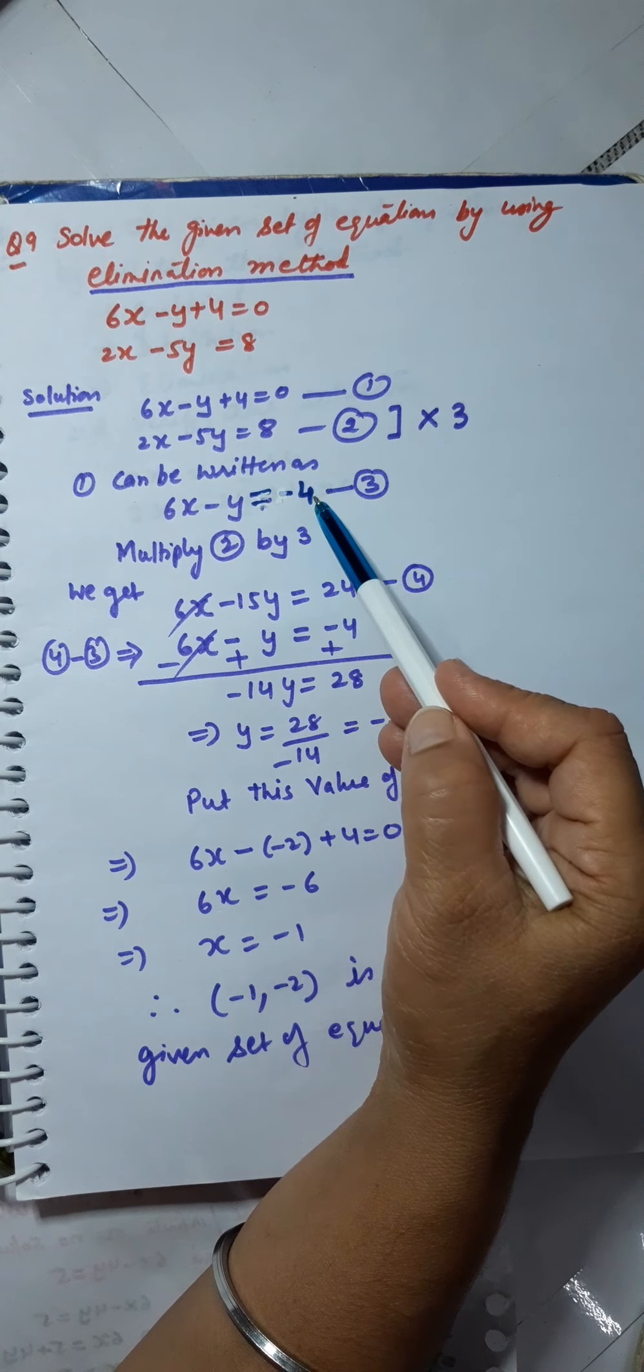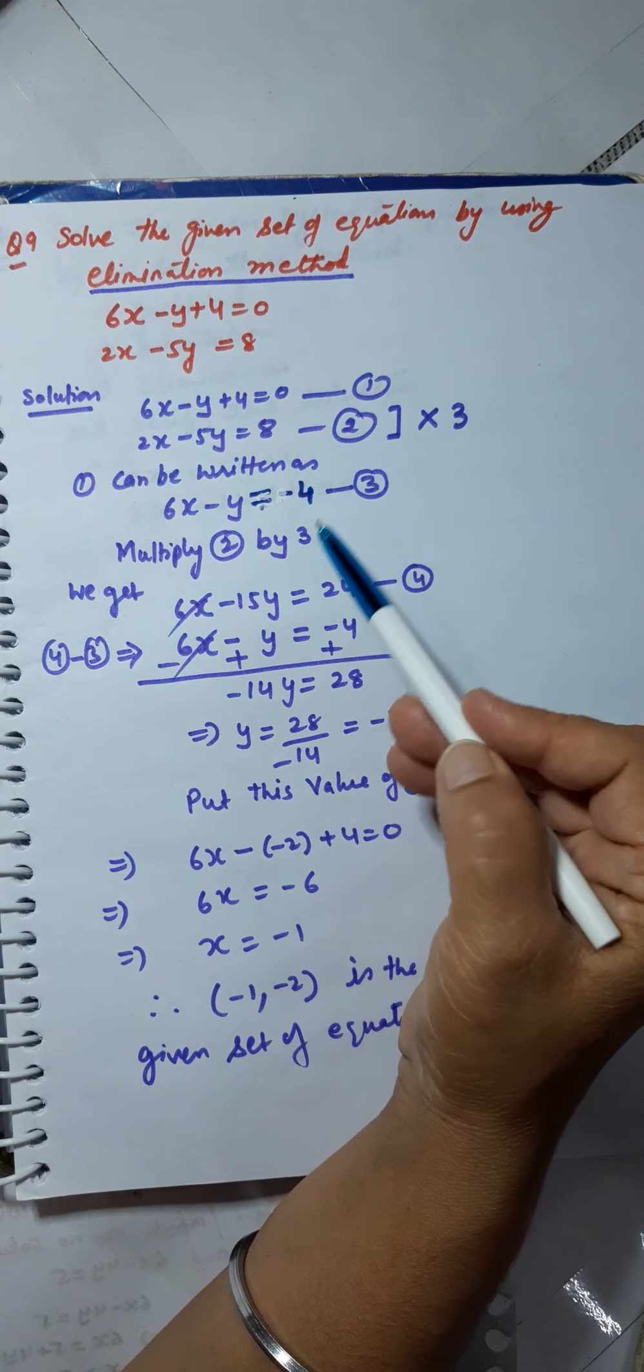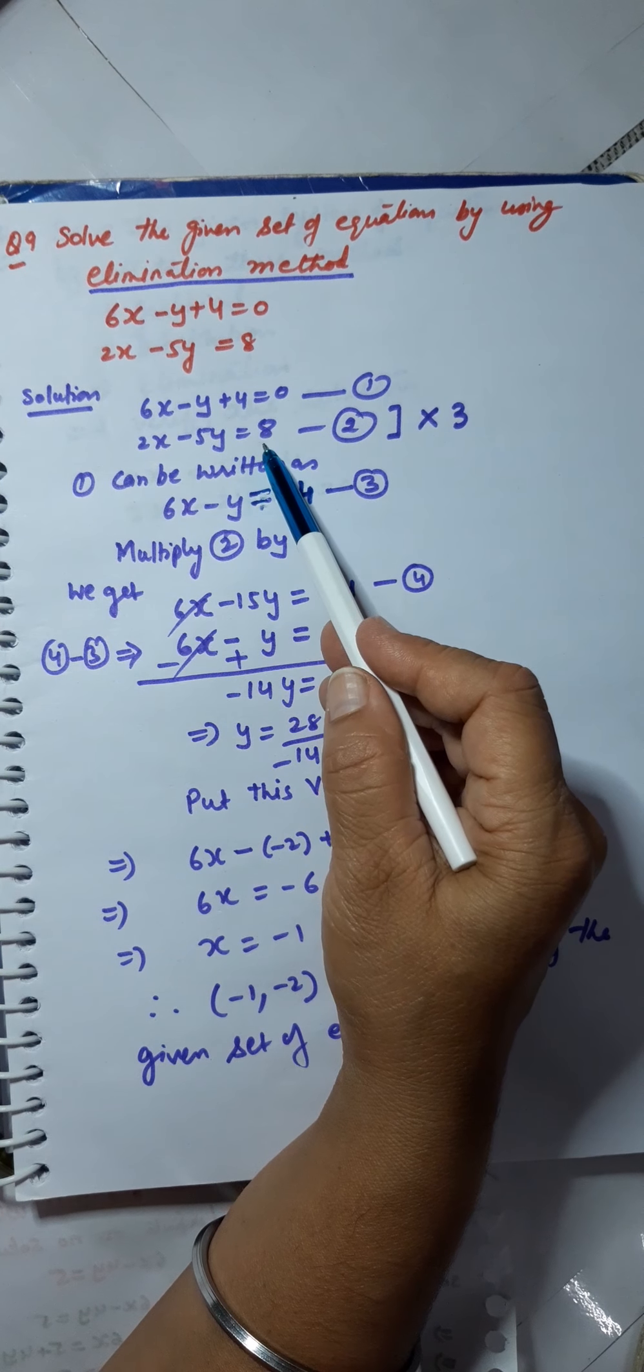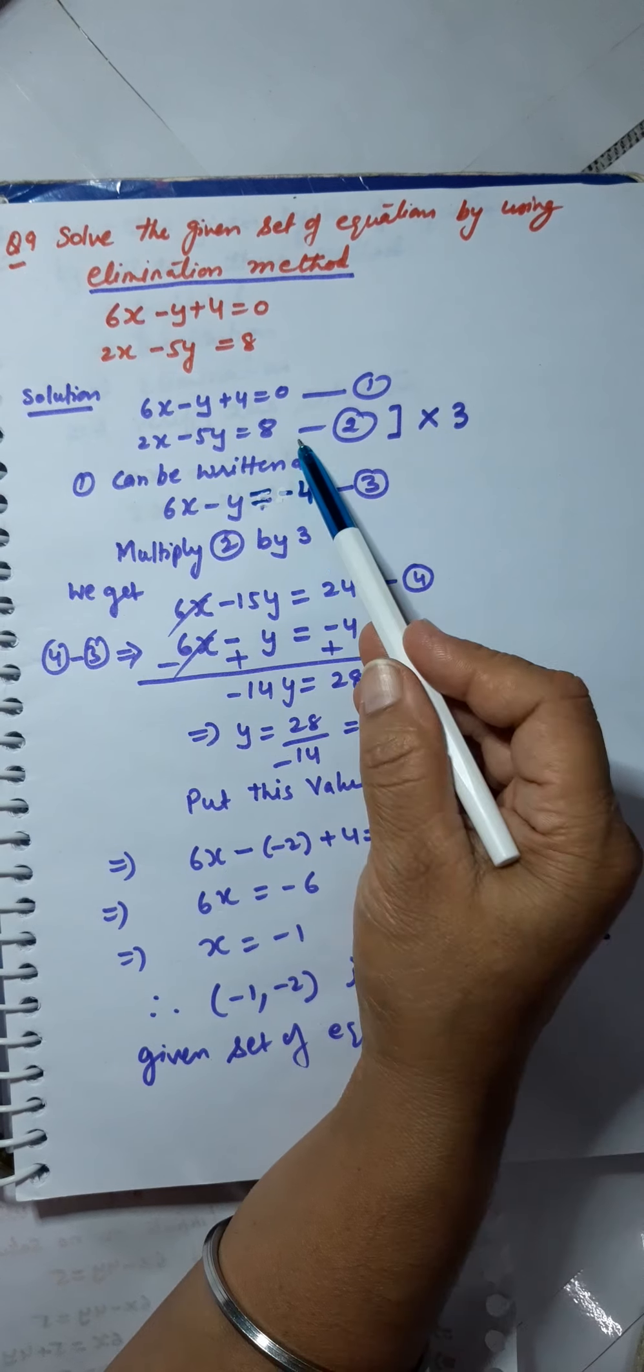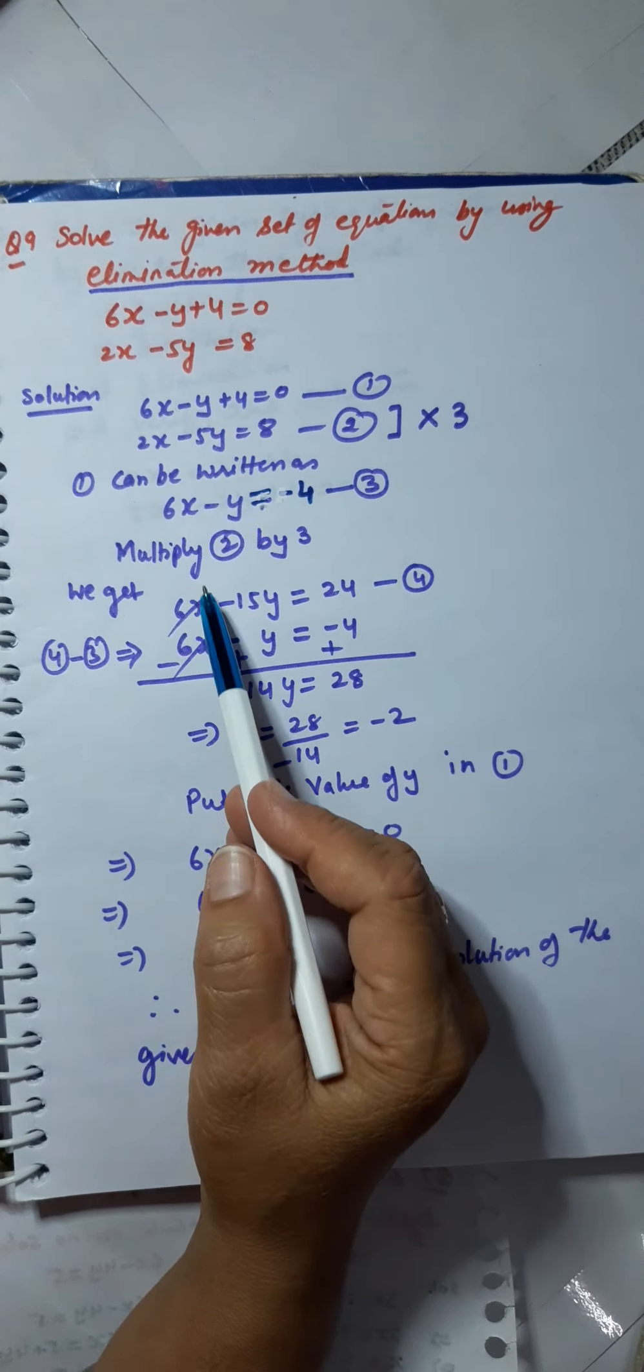That is, I have taken the constant term on this side. And in the second equation also, the constant term is on right hand side. So now they are similar.